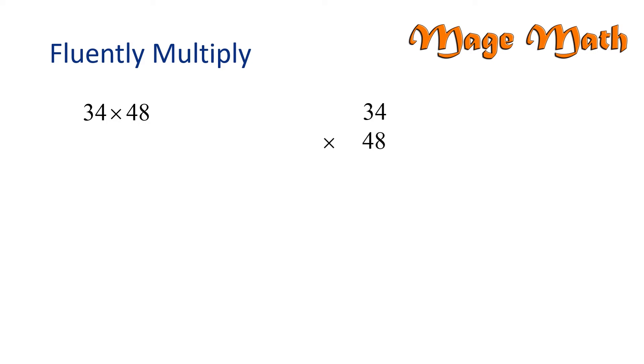Let's multiply thirty-four times forty-eight. We'll write the problem vertically, aligning the ones and the tens. Now let's multiply. Eight times four is thirty-two, but we need to carry the three.